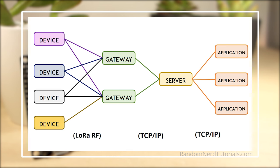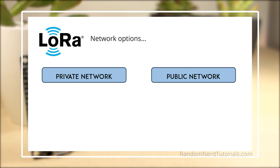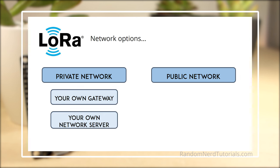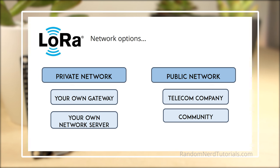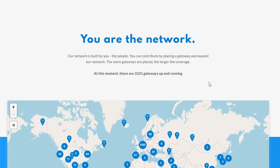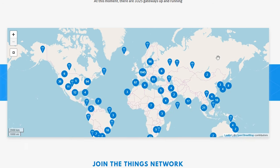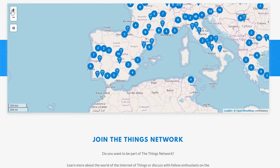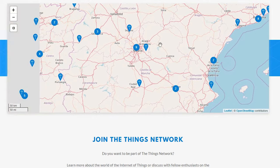There are two LoRa network options: Private Network and Public Network. You can build your own private wireless sensor network by setting up your own gateway and network server. Or you can use LoRaWAN infrastructure offered by a third party, allowing you to deploy your sensors in the field without investing in gateway technology. Public networks can be managed by a telecom company or by a community of people. For example, you can set up and register your own gateway in the Things Network, allow other people to use your gateway for long-range connectivity, or use the community gateways. If many people set up and share their gateways, we are able to cover wide areas and allow transmission of messages at longer distances.